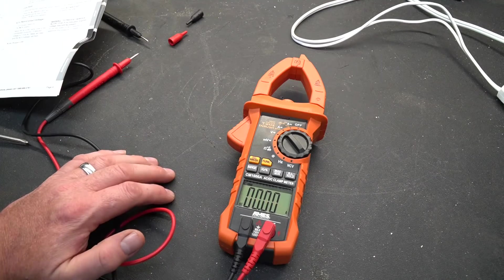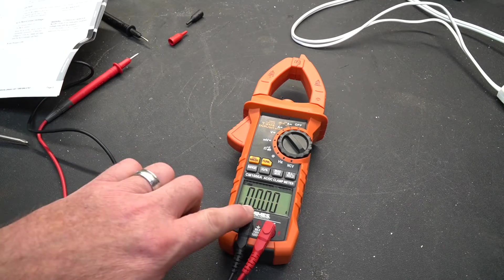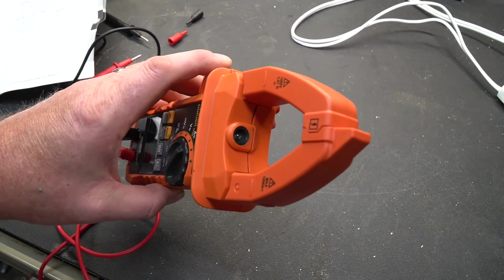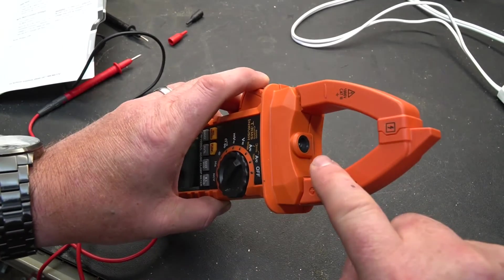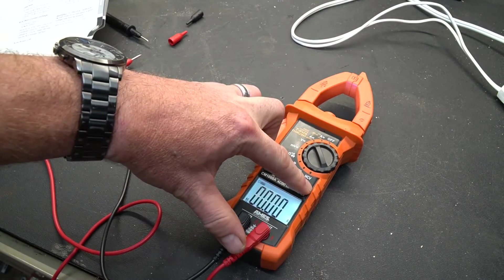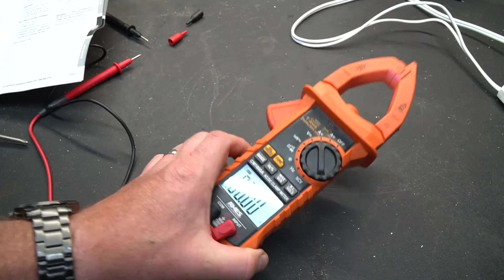Now this multimeter is chocked full of features and to keep this video short we're not going to go through all of them. It does have a backlight. It also has a little work light on the end so when you're measuring amps and things like that you need to use a clamp. It has a little flashlight built right into the end which is pretty handy and obviously the backlight is awesome because there are many times where you're basically in the dark and you need to see the meter and with that backlight you can do so.